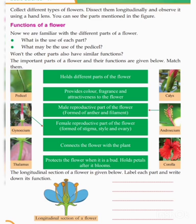The female reproductive organ of the flower is the Gynesium. It is formed of stigma, style and ovary.